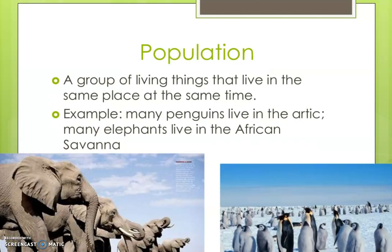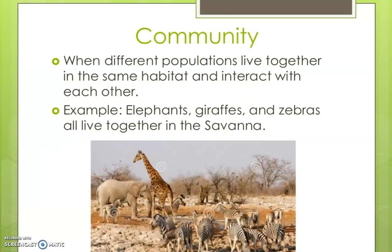Next is population. A group of living things that live in the same place at the same time is called a population. For example, many penguins live in the Arctic, and many elephants live in the African savannah.